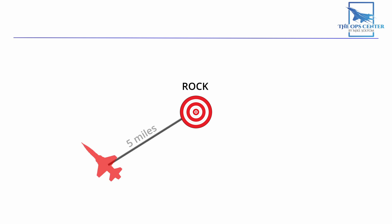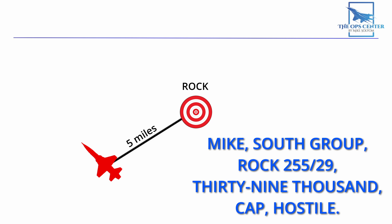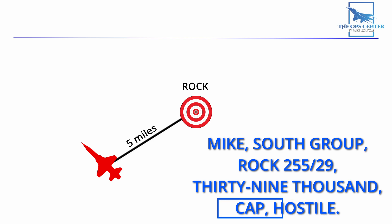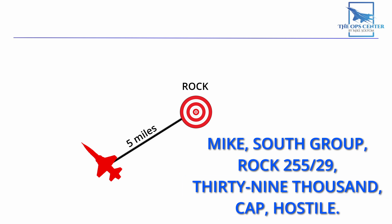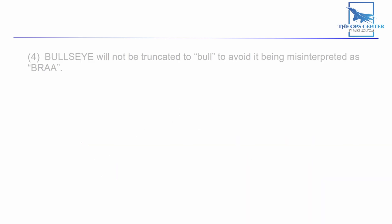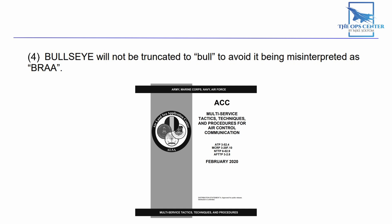Bullseye can also be given a codename in special circumstances — so let's say it was codenamed ROCK. One last rule to remember with bullseye is this: bullseye will not be truncated to 'bull' to avoid it being misinterpreted as BRA.